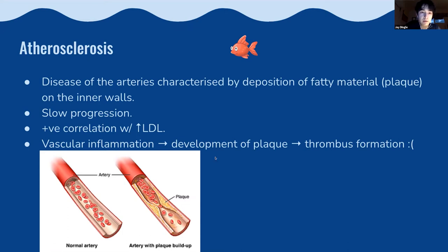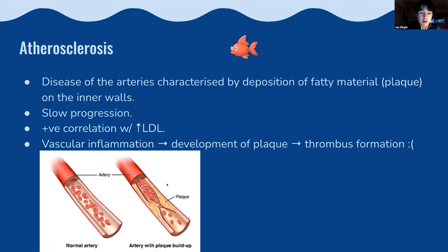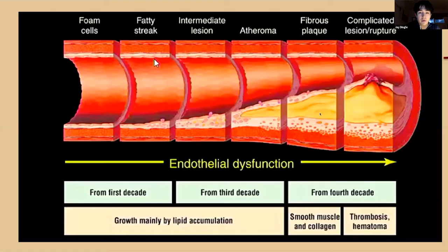In the diagram you can see a normal artery compared to one that has plaque — the arteries are much more narrow. The timeline diagram reiterates that this happens over many, many decades: growth mainly by lipid accumulation in the first 10 to 30 years.